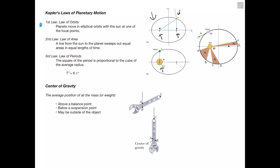The second law is the law of area, and it states that a line from the sun to the planet sweeps out equal areas in equal lengths of time. During a planet's orbit, it takes the same amount of time to get from point A to point B as from point C to point D, or point E to point F. These areas are all equal. If each segment takes two months, the sun always sweeps the same area within the planet's motion in that same time.